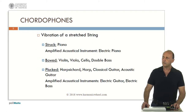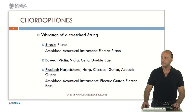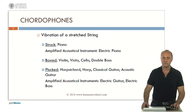Now let's start with the analysis of chordophones. In this case, the sound is generated by the vibration of a stretched string, which can be struck — as in a piano — bowed, as in the violin, viola, etc., or plucked, as in the harpsichord, harp, and the guitars.